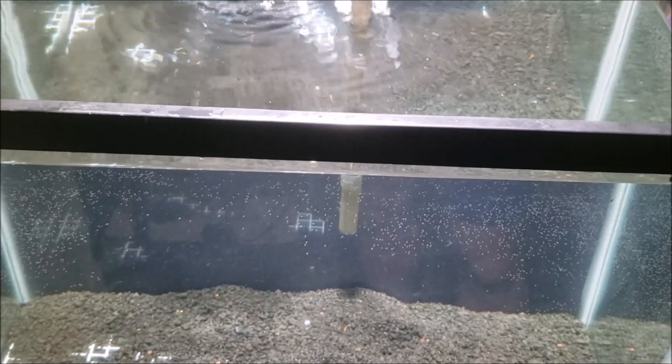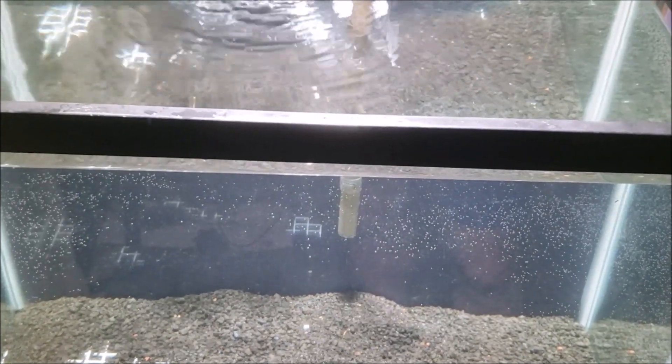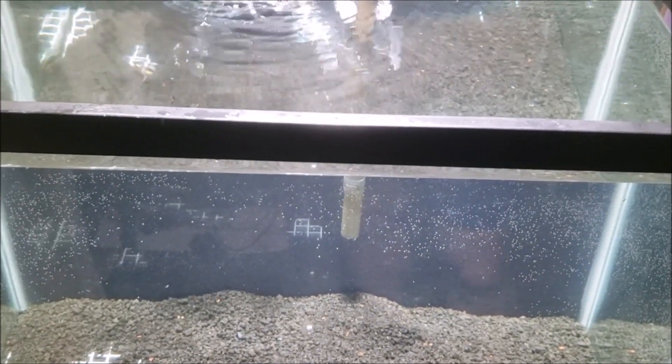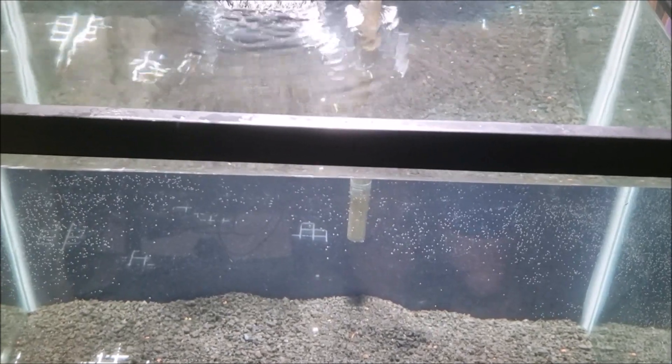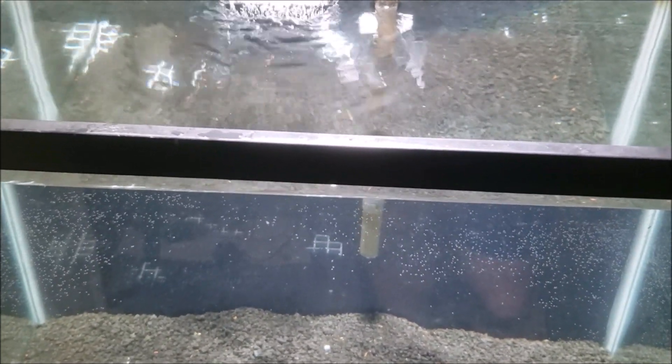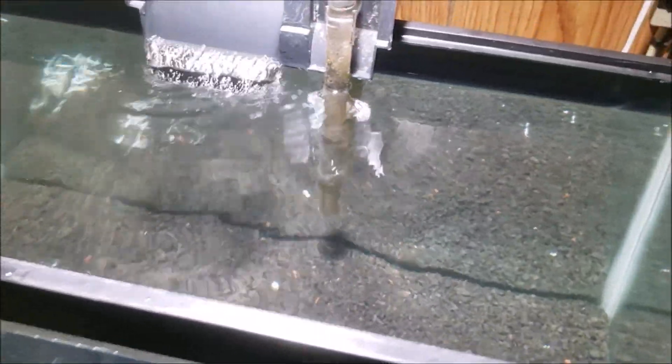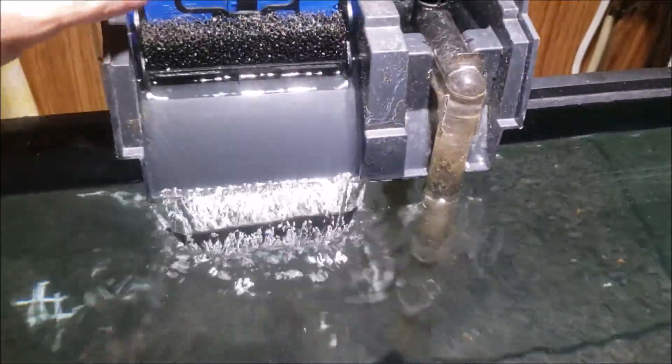Right now we still have no nitrite in the tank. Once we start establishing a nitrogen cycle we will begin to see the ammonia go down and the nitrite will start to come up. So now we've got to artificially spike the tank with bacteria.